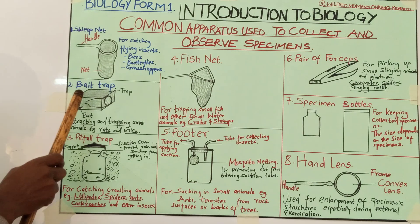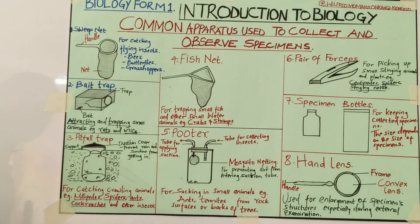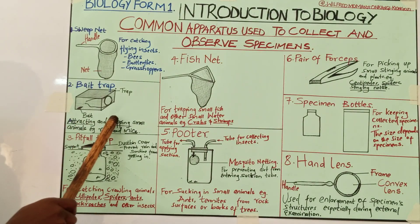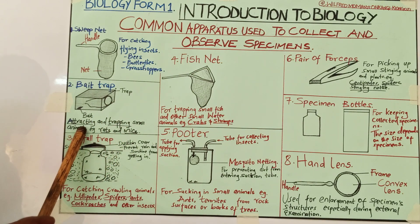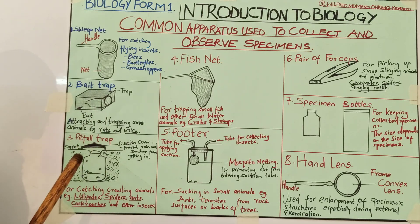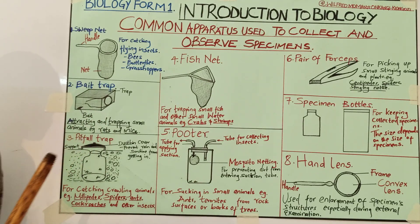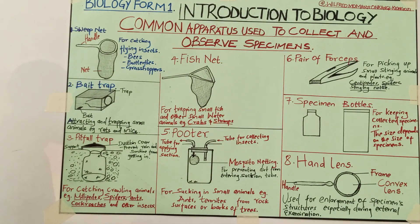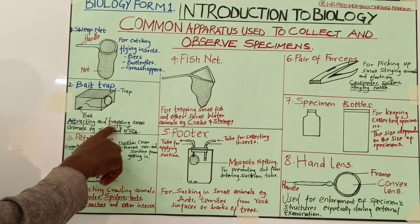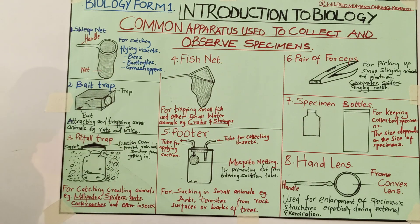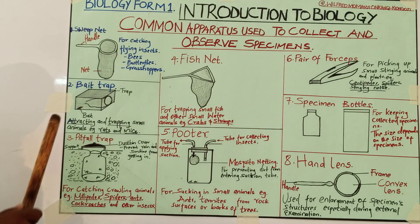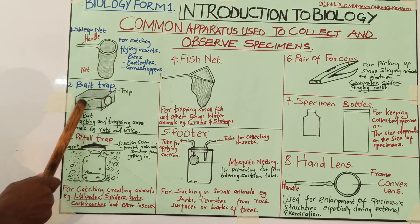So the function of the bait trap is for attracting and trapping small animals, for example rats and mice. That is why there is a section for the bait at this corner.